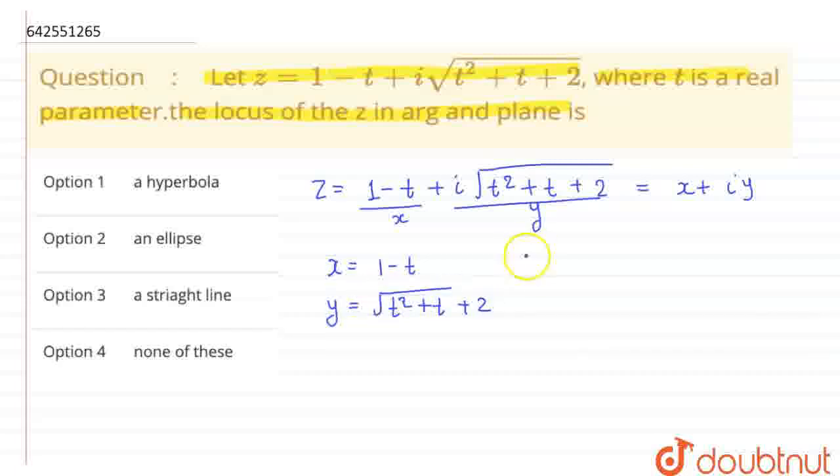So, I can write here t equals 1 minus x and if I put the value of 1 minus x here, then we have to take the square root, make it square, and then decline this one.